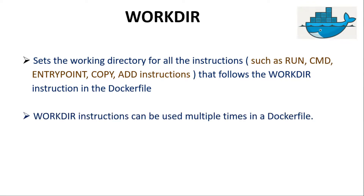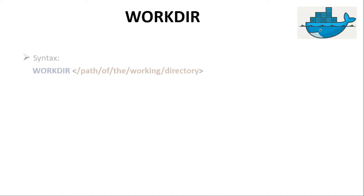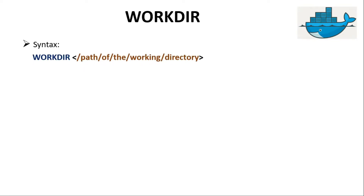The WORKDIR instruction can be used multiple times inside the Dockerfile — that is, we can set the working directory path as many times as we want. When a relative path is provided as a value to the WORKDIR instruction, that path is considered relative to the path of the previous WORKDIR instruction. The syntax is simply the WORKDIR keyword followed by the path we want to set as the working directory inside the Docker image.